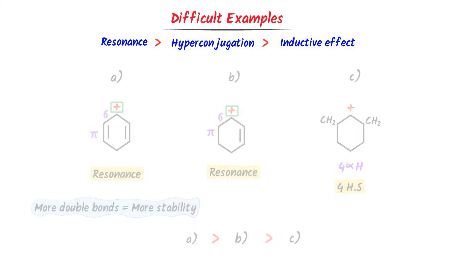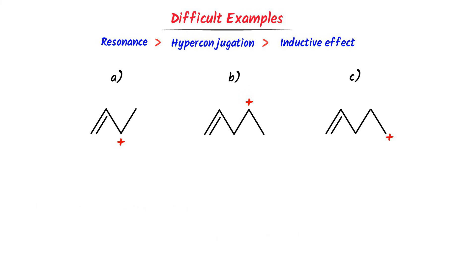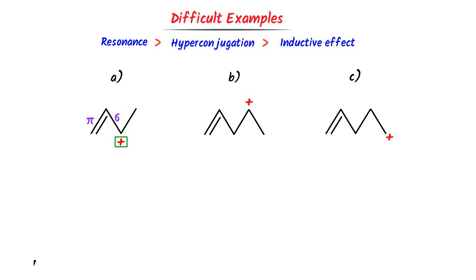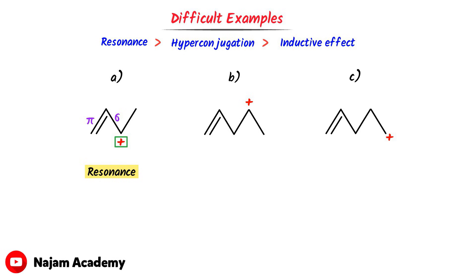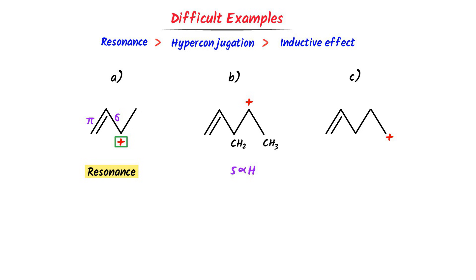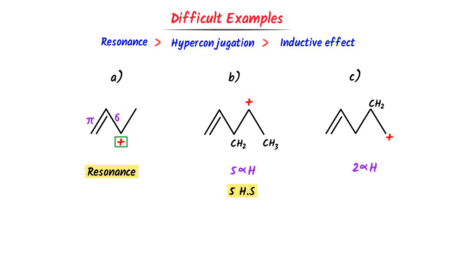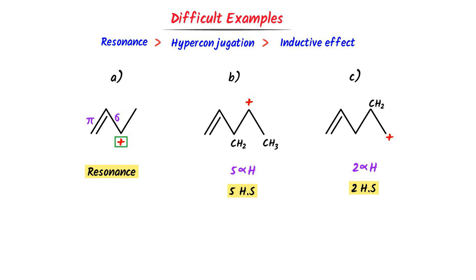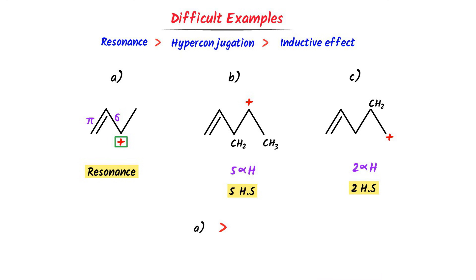Now consider these carbocations. In the first part, resonance is possible. In the second part, with CH2 and CH3 adjacent, there are five alpha hydrogens, so five hyperconjugated structures are possible. A is most stable because resonance occurs in it, then B due to five hyperconjugated structures, and C is less stable due to two hyperconjugated structures.